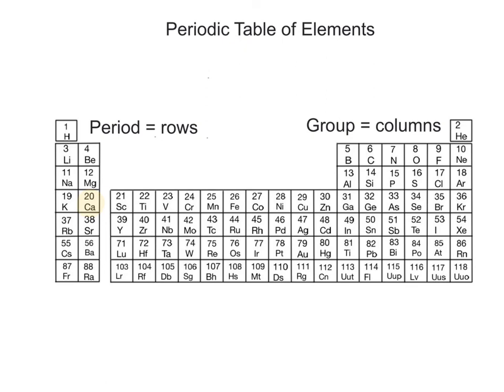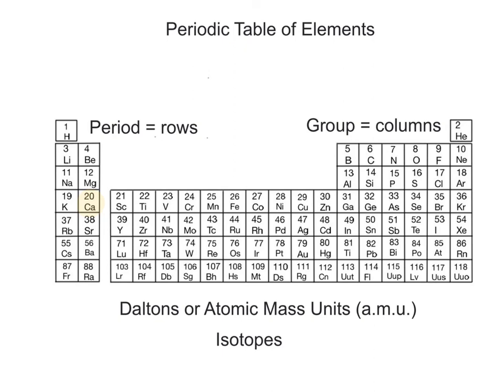The atomic mass is the average mass of all of the naturally occurring isotopes of an element. It is measured in units called Daltons, or atomic mass units, abbreviated AMU. We will learn more about isotopes in the next video.